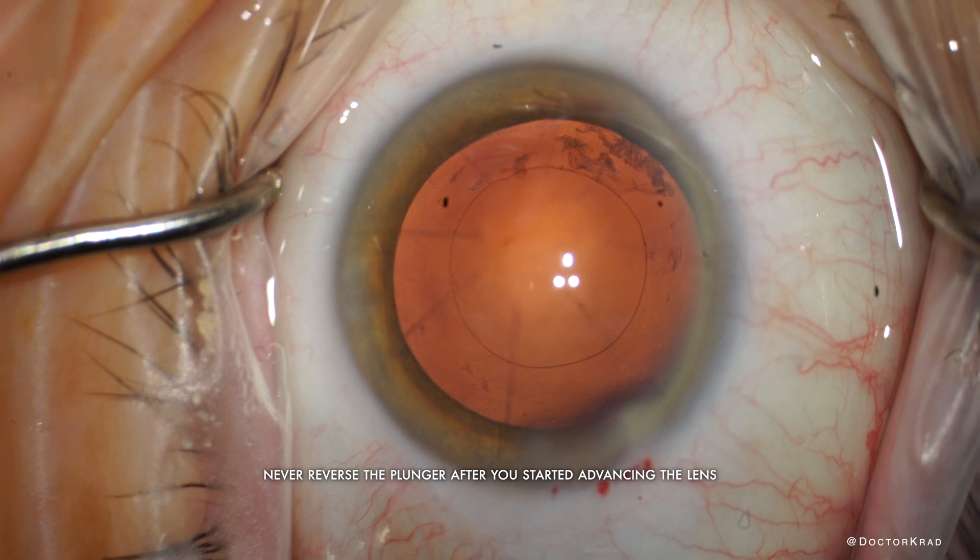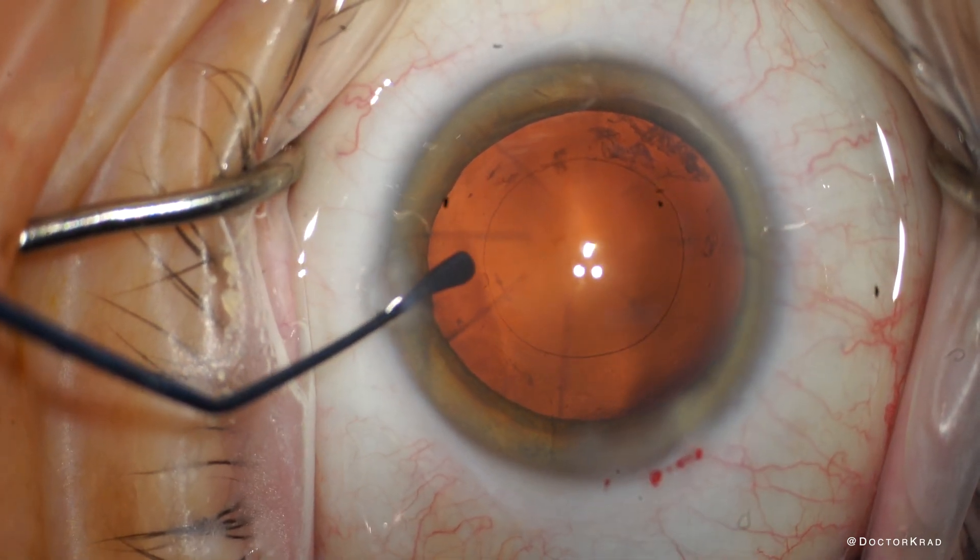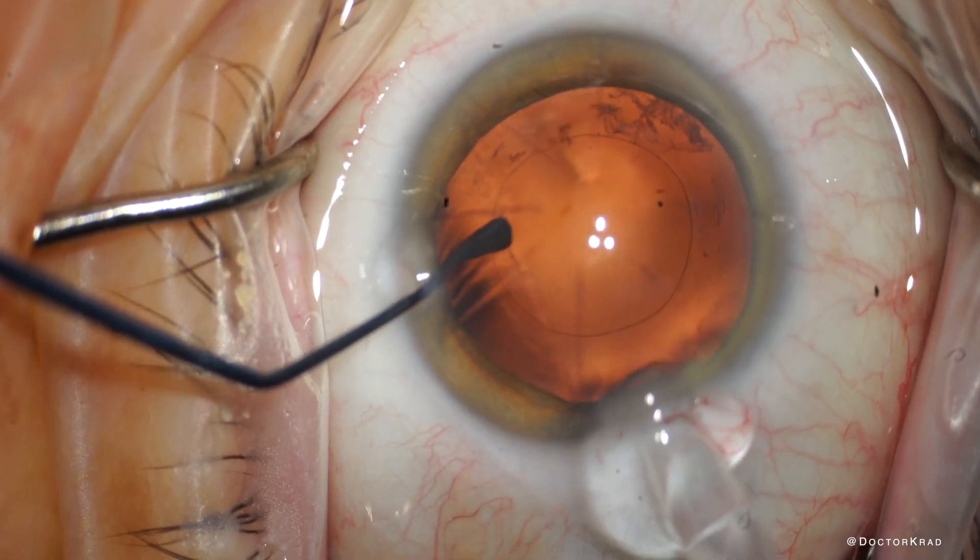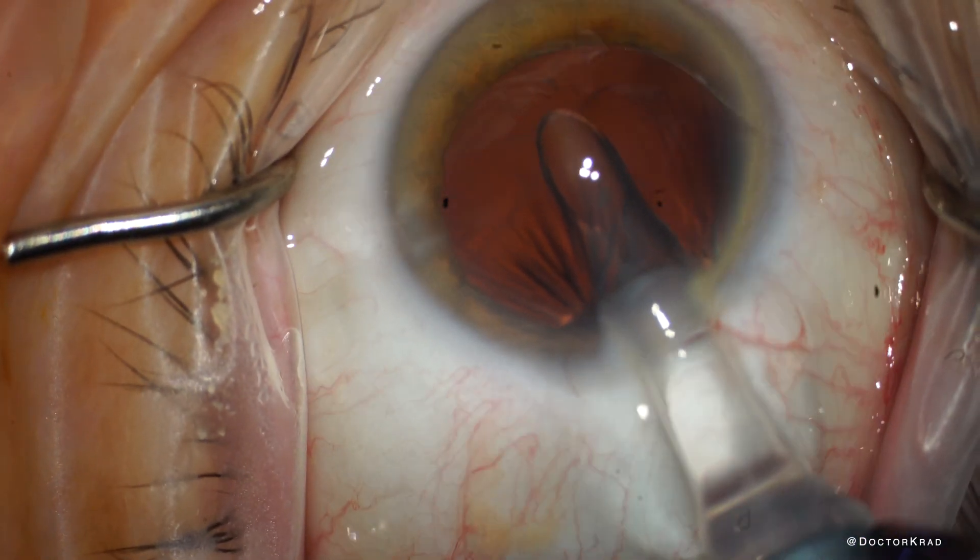Okay, so it looks like we are ready. Let's take it to the eye. I use the second instrument for counter traction. And then we're going to place the injector through the incision. Make sure that the notch of the injector passes the capsulorexis and iris.